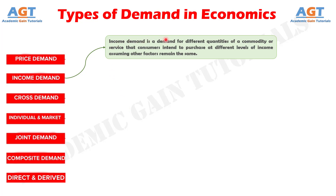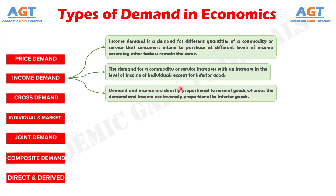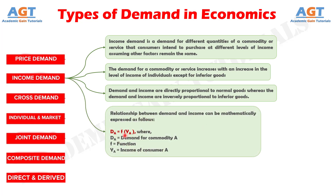Income demand is the demand for different quantities of a commodity or service that consumers intend to purchase at different levels of income, assuming other factors remain the same. Generally, demand for a commodity increases with an increase in income except for inferior goods. Demand and income are directly proportional for normal goods, whereas they are inversely proportional for inferior goods. This relationship can be expressed as: D(A) = f(Y(A)), where D(A) represents demand for commodity A and Y(A) represents income of consumer A.